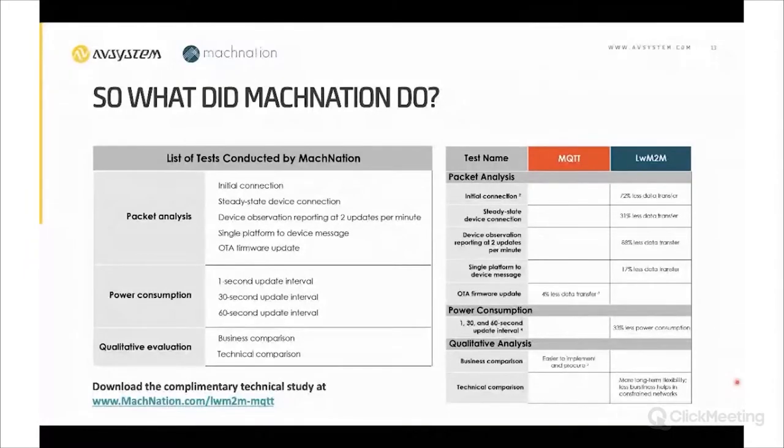Then we looked at a single platform-to-device message. This could be a command to change a reporting frequency, initiate a firmware update, or take some action if the IoT device is an actuator. This is the most isolated pure case of looking at a single back-and-forth message between the platform and the device. Last but not least, we looked at a variety of OTA firmware update scenarios.